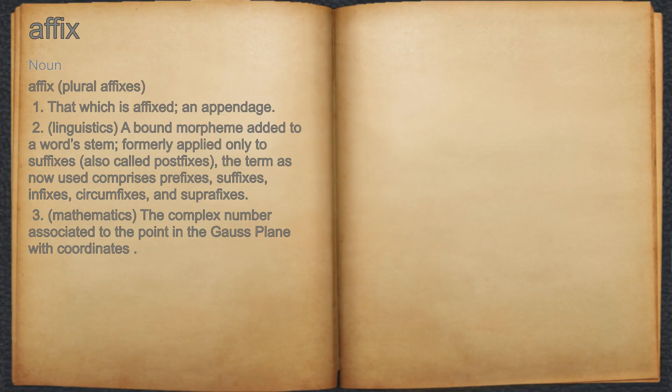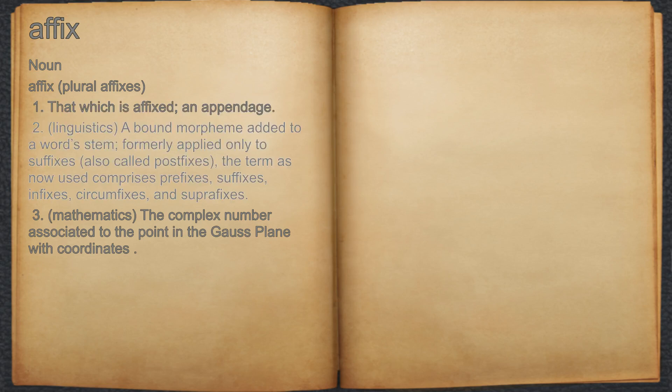Affix. Noun. 1. That which is affixed; an appendage. 2. Linguistics: a bound morpheme added to a word stem, formally applied only to suffixes, also called postfixes. The term as now used comprises prefixes, suffixes, infixes, circumfixes, and superfixes.